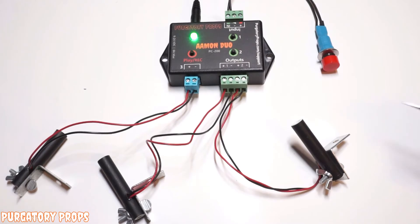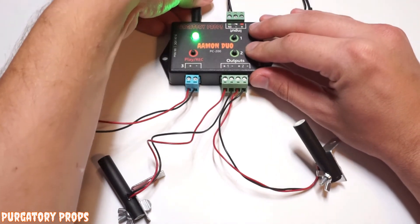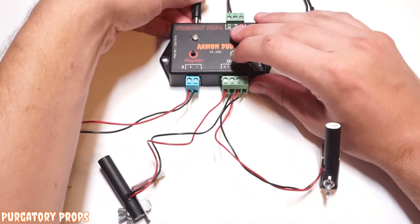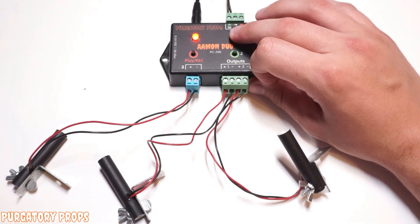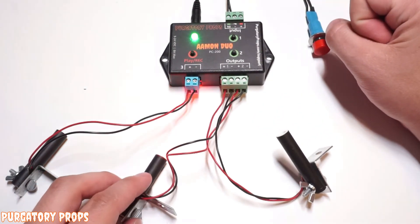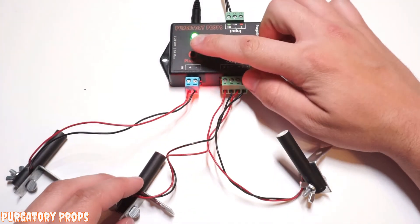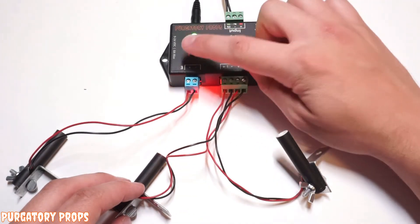There are other things you can configure by holding buttons when the controller is turned on. So if we hold button one and turn back on the controller, release when the light turns red, we'll see output one turns on. So now output one is in inverted mode.